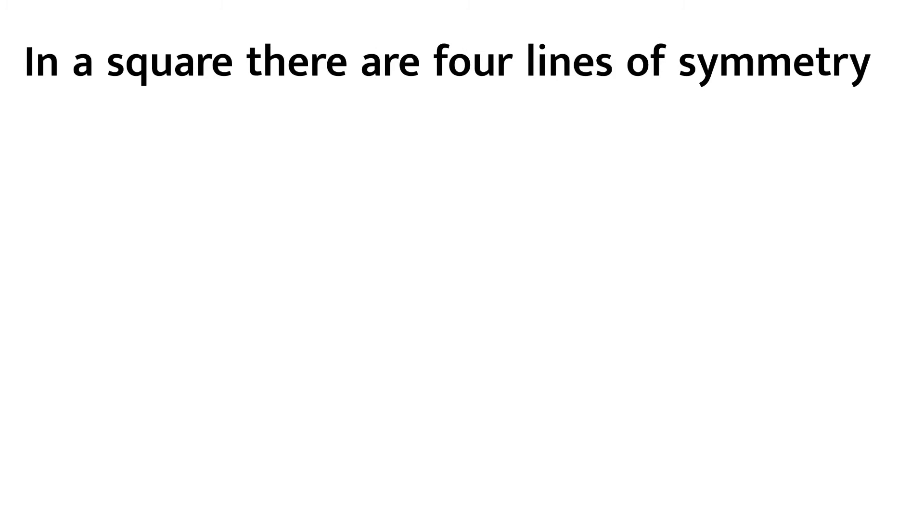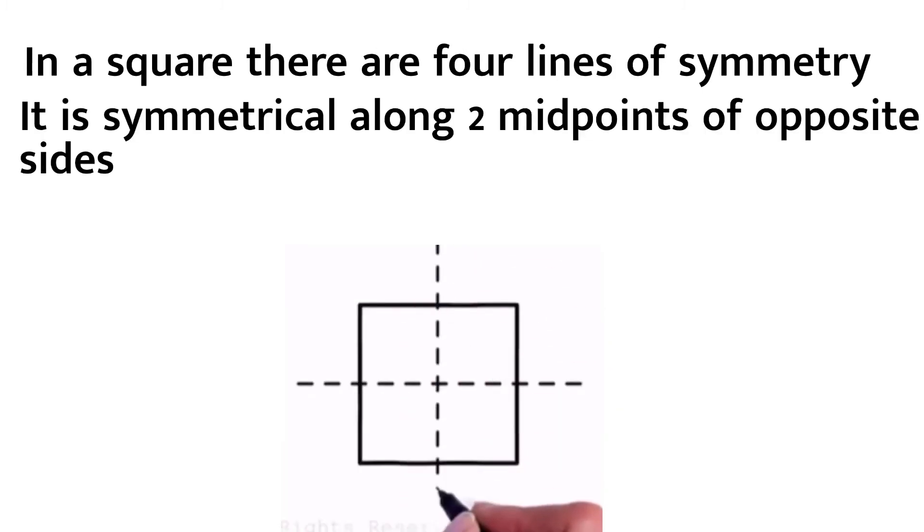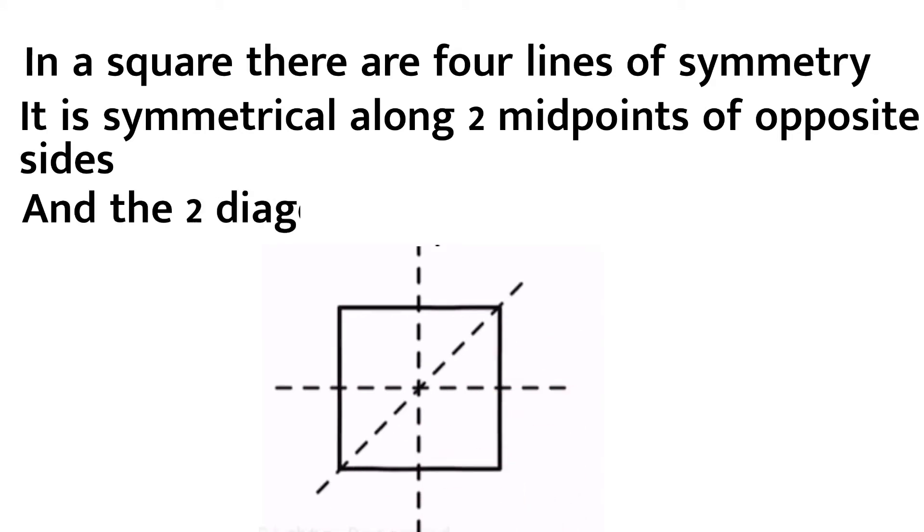In a square there are four lines of symmetry. It is symmetric along two midpoints of opposite sides, and the two diagonals.